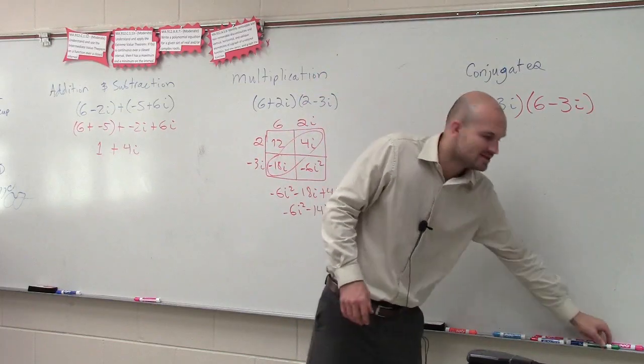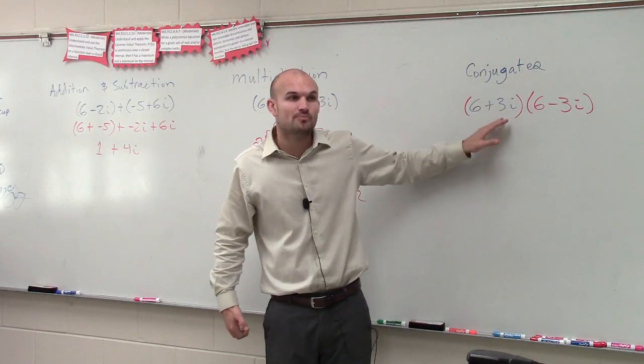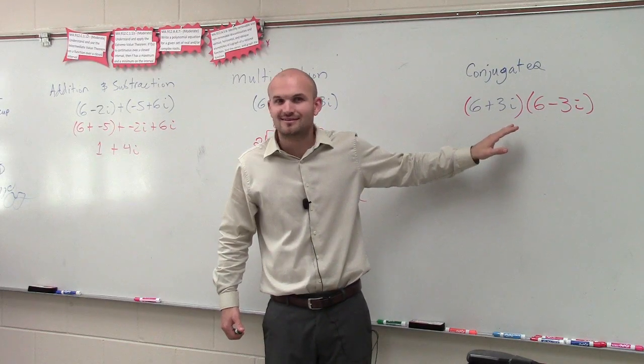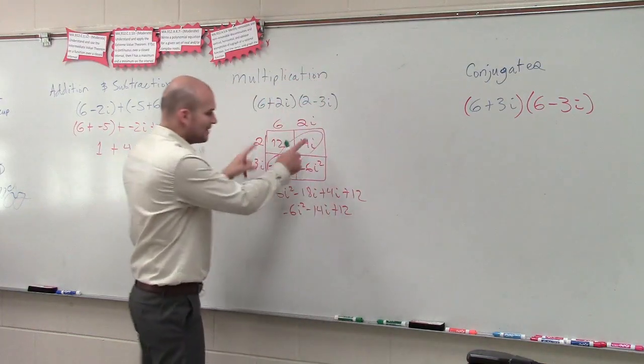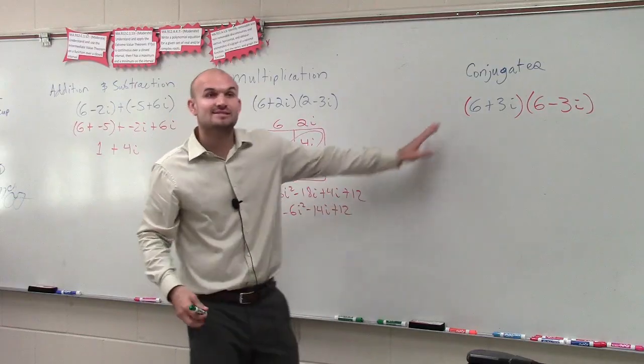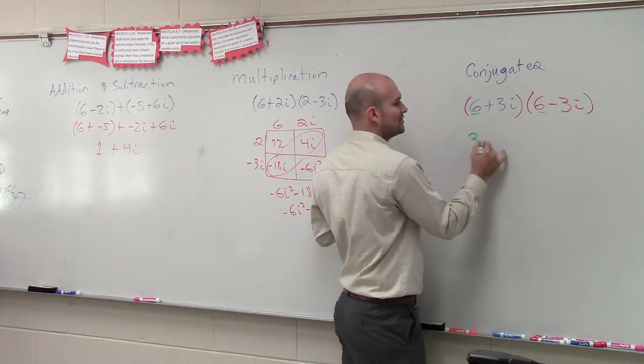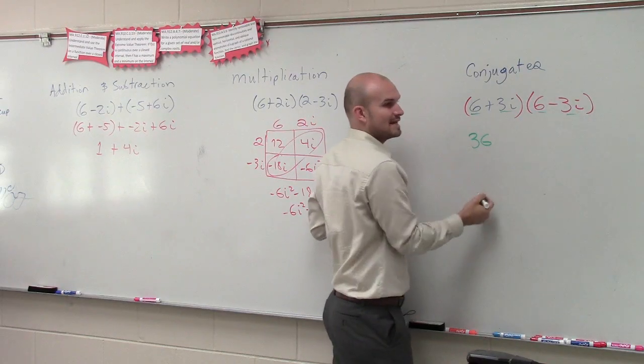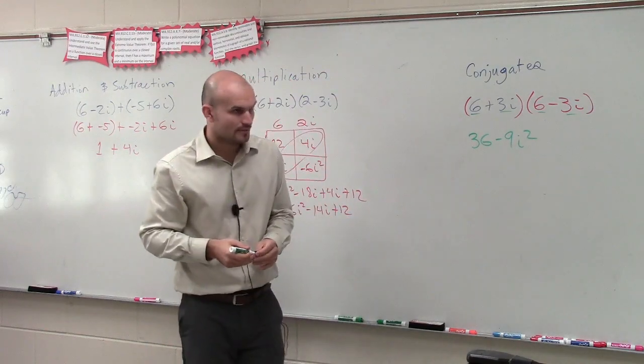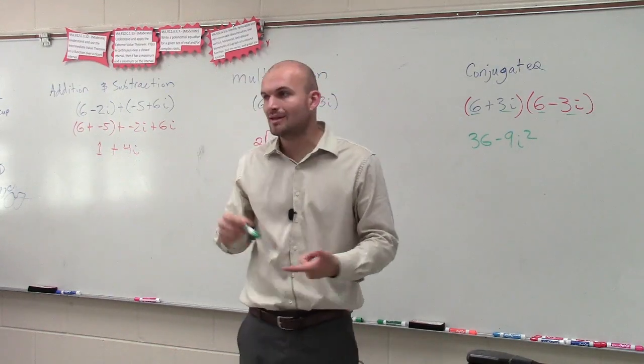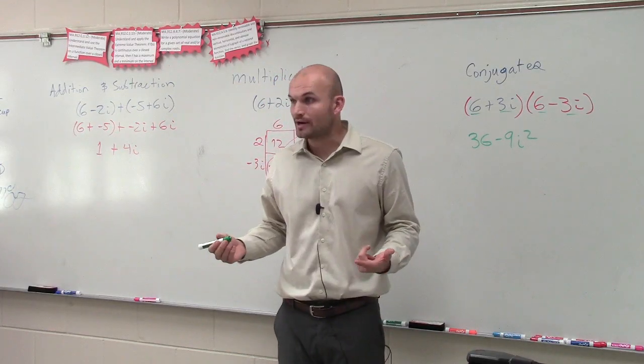Then the next thing I want to do is show you guys, if I multiply conjugate pairs, we know this is a difference of two squares. So a difference of two squares, you guys can multiply it like this and spend all the time doing that if you want to, but you notice that the first two terms are the same so you multiply them, which is 36. The last two terms are the same so you multiply them and you get negative 9i squared.